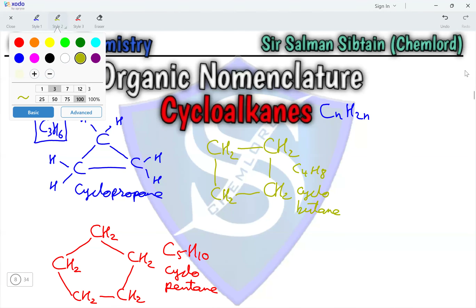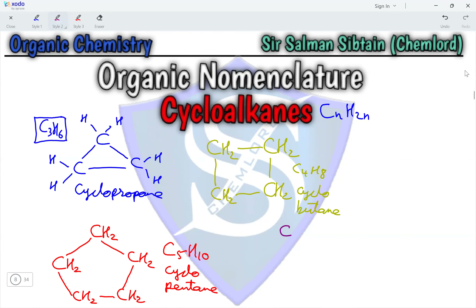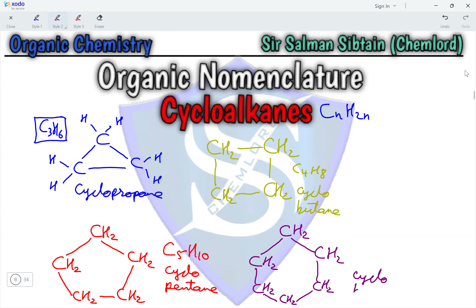The next compound in the cycloalkane homologous series consists of six carbon atoms, each attached to two hydrogen atoms, in a cyclic ring forming a six-membered carbon ring. The name of this compound is cyclohexane, and its molecular formula is C6H12, as can be seen from the drawn structure.